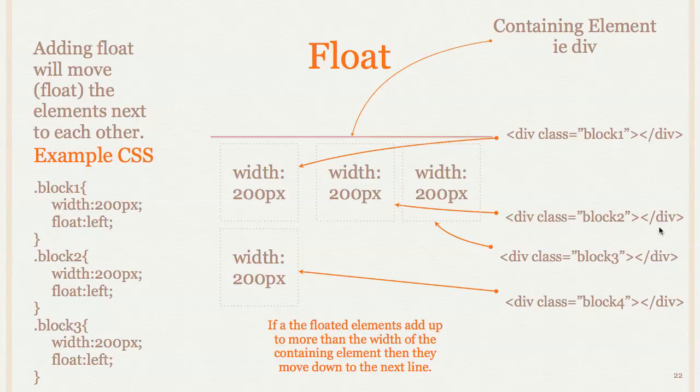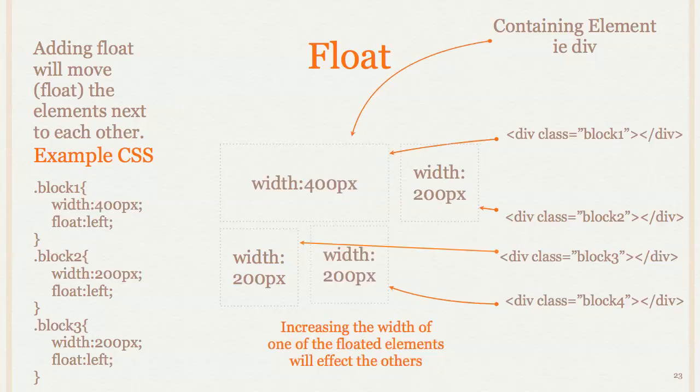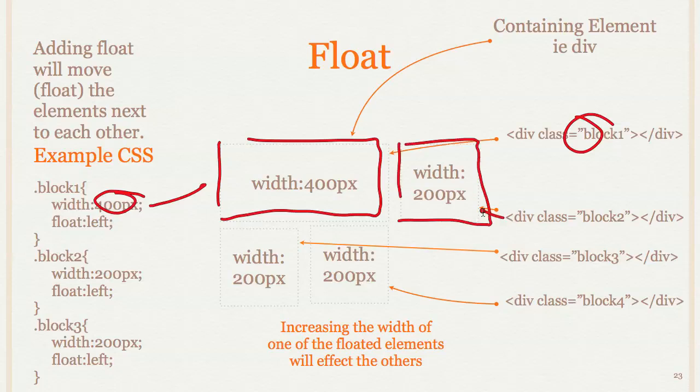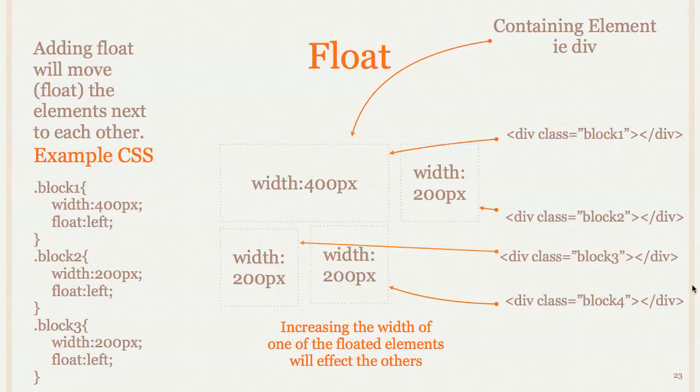So let's say I increase the width of one of these. We increased this width to 400 pixels on block one. That gave it 400 pixels for block one. Now there's only enough room for one of these left, so that block two will still go there, and then block three moves itself down to the next row, and block four goes next to it. So they kind of just reorder themselves like that. If I decrease this width, I might be able to fit the other one up there. So increasing and decreasing the widths will affect the other floated elements.